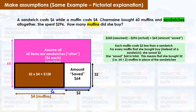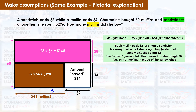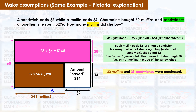32 muffins times $4 each equals $128. 60 minus 32 equals 28 sandwiches. Together, 32 muffins and 28 sandwiches account for all $296. So 32 muffins and 28 sandwiches were purchased.